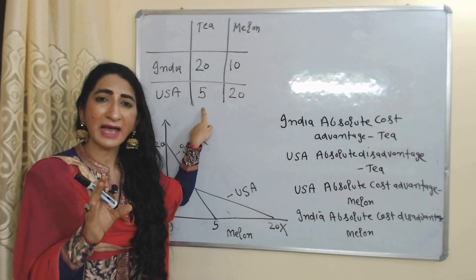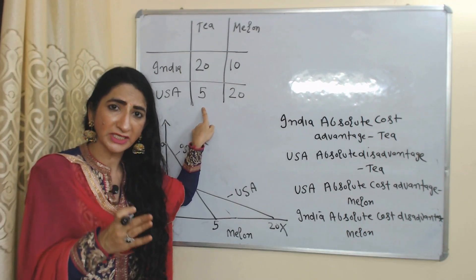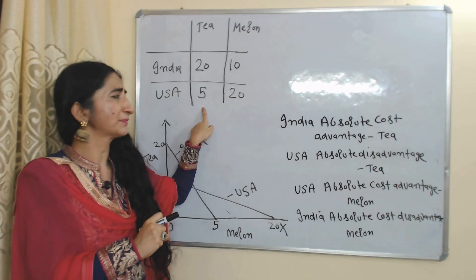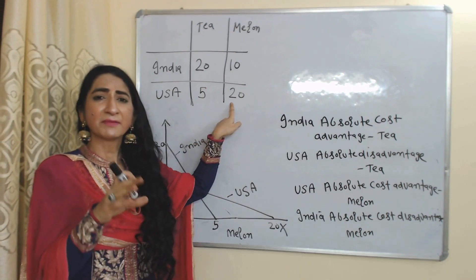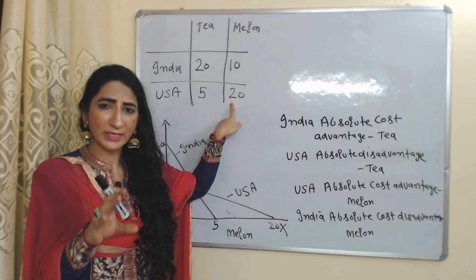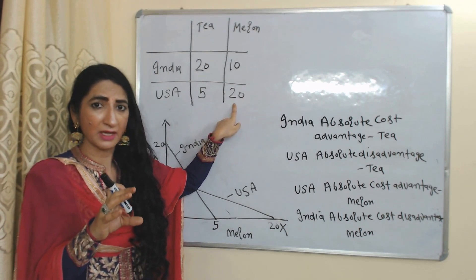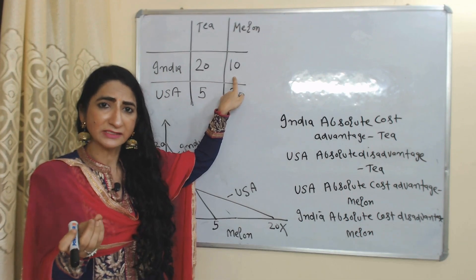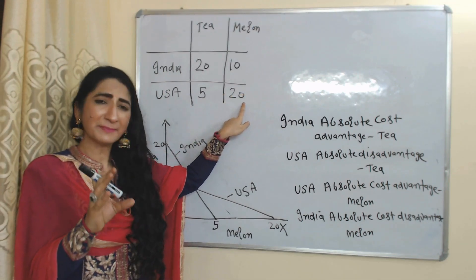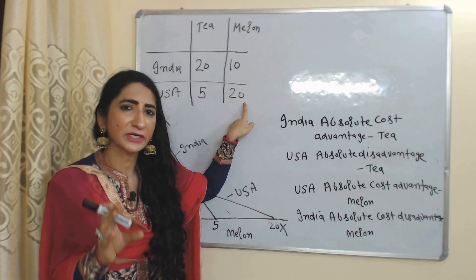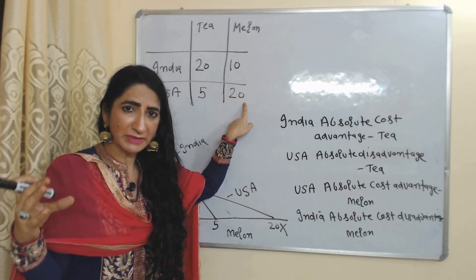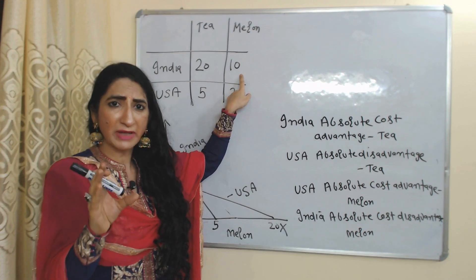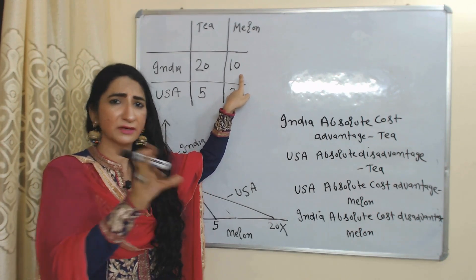USA has absolute disadvantage in production of tea because USA can produce tea at higher cost as compared to India. On the other hand, by using eight hours of labor, USA can produce 20 units of melon, while with the same eight hours of labor, India can produce only 10 units of melon. So USA has absolute cost advantage in production of melon, but India has absolute disadvantage in production of melon.